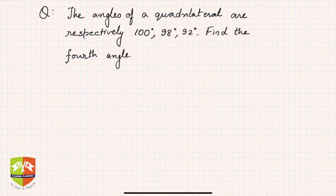The angles of a quadrilateral are respectively 100 degrees, 98 degrees, and 92 degrees. We have to find the fourth angle. So three angles are given and we have to find the fourth angle, and we know the angle sum property.